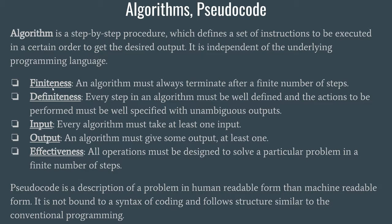Now let us discuss the properties or characteristics of an algorithm. There are five main characteristics. The most important is finiteness: whenever you write any algorithm or code, you must head towards the output. It is not at all worth it if you write an algorithm that continues till the end of time — that becomes an infinite loop which will never terminate. By every step we take, we should get closer to solving the problem.